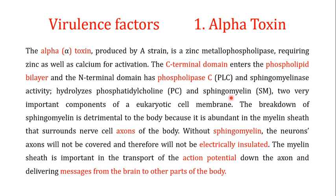Phosphatidylcholine and sphingomyelin are two very important components of the eukaryotic cell membrane. The breakdown of sphingomyelin is particularly detrimental because sphingomyelin is very abundant in the myelin sheath surrounding the axons of neurons. Without sphingomyelin, the neuron axon is not covered and therefore not electrically insulated. The speed of nerve signal transmission depends on this electrical insulation, so its degradation negatively affects neural message transfer.